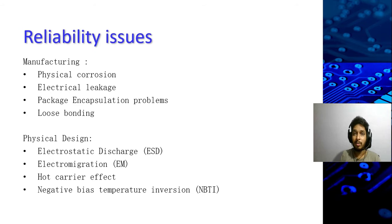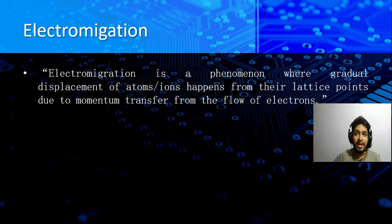There are also physical design reliability issues which are electrostatic discharge, electromigration, hot carrier effect, and negative bias temperature inversion or NBTI. One of these is electromigration, it's the most popular one. Let's understand why and what is electromigration. By definition, electromigration is a phenomenon where gradual displacement of atoms or ions happens from their lattice points due to momentum transfer from the electron flow.